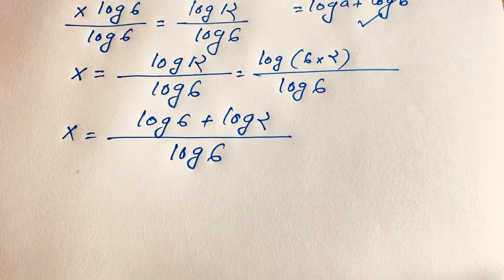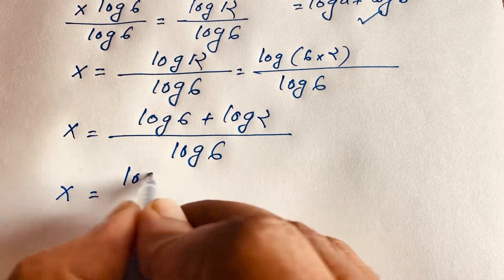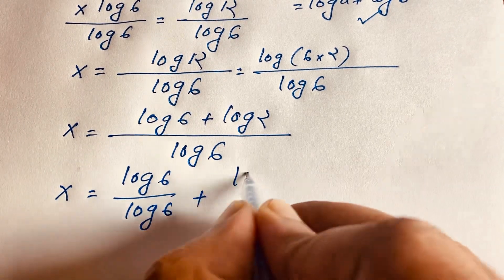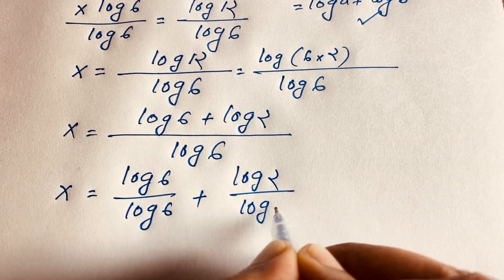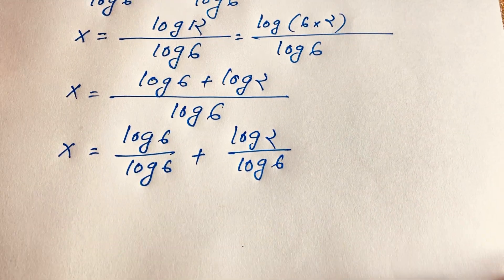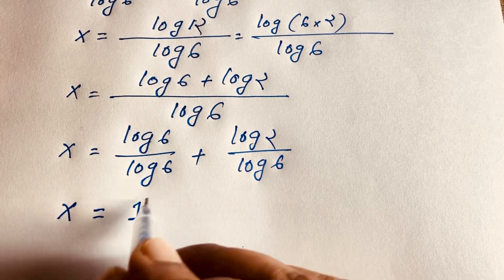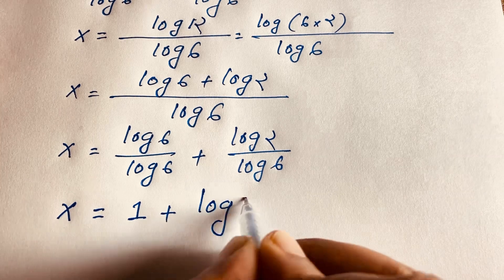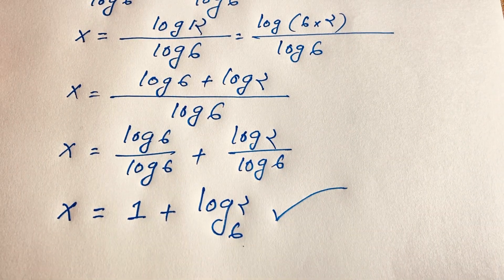If we divide both terms in the numerator by log 6, we find log 6 over log 6 plus log 2 over log 6. Log 6 over log 6 cancels to 1, so our final answer is x is equal to 1 plus log 2 base 6.